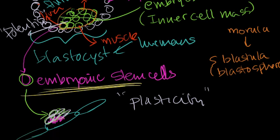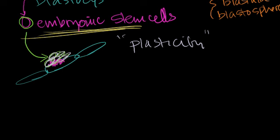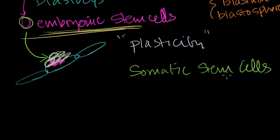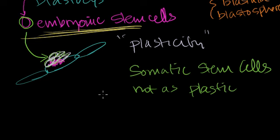Why don't they just call them stem cells instead of embryonic stem cells? That's because in all of our bodies, we have what are called somatic stem cells, also known as adult stem cells. We all have them — they're in our bone marrow to help produce red blood cells and in other parts of our body. But the problem with somatic stem cells is they're not as plastic, meaning they can't form any type of cell in the human body.